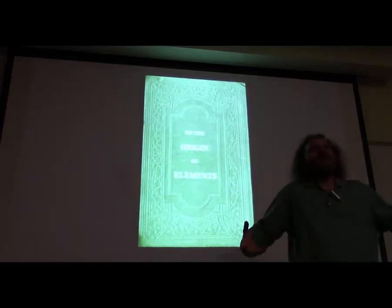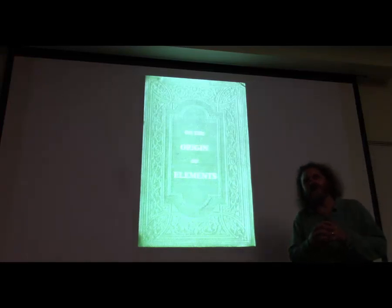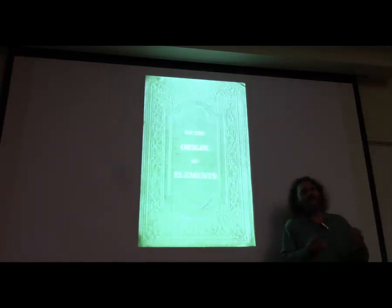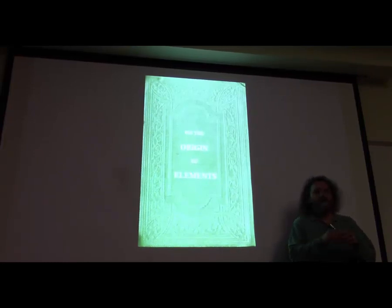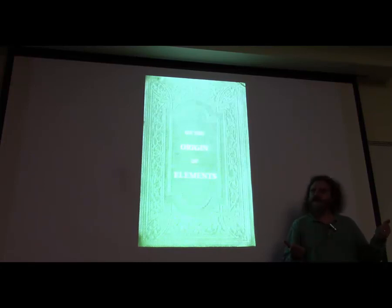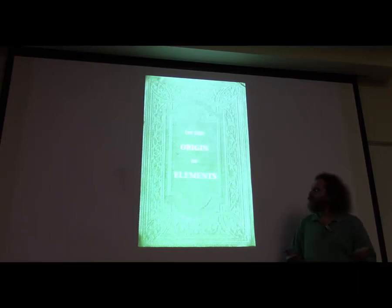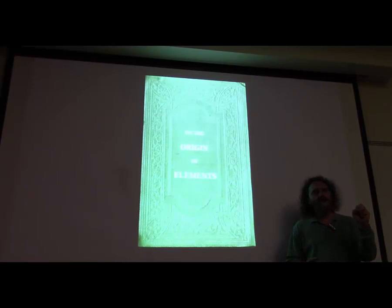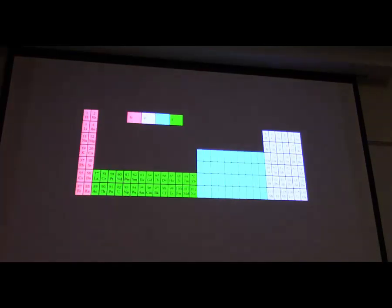We know that atoms are not elemental—they're made of smaller bits: protons, neutrons, and electrons. Electrons can come and go on atoms; an atom can take on or lose an electron when forming a molecular bond. But the nuclei of atoms are much more tightly bound. How did protons and neutrons come together to form elements? That's what I want to talk about—the origin of the elements.